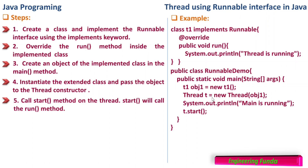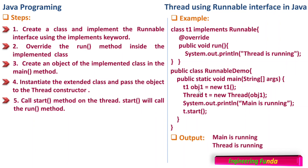So what is the output of this? The output will print 'main is running' and 'thread is running'. That means t.start is actually calling the run method and then 'thread is running' is printed.